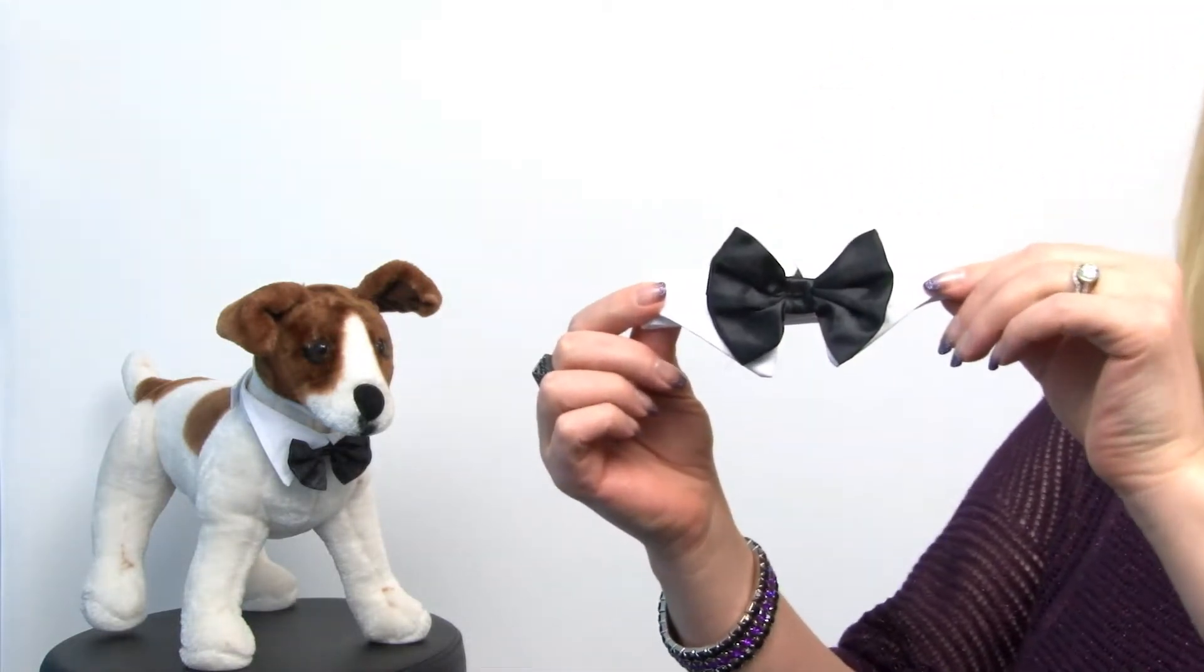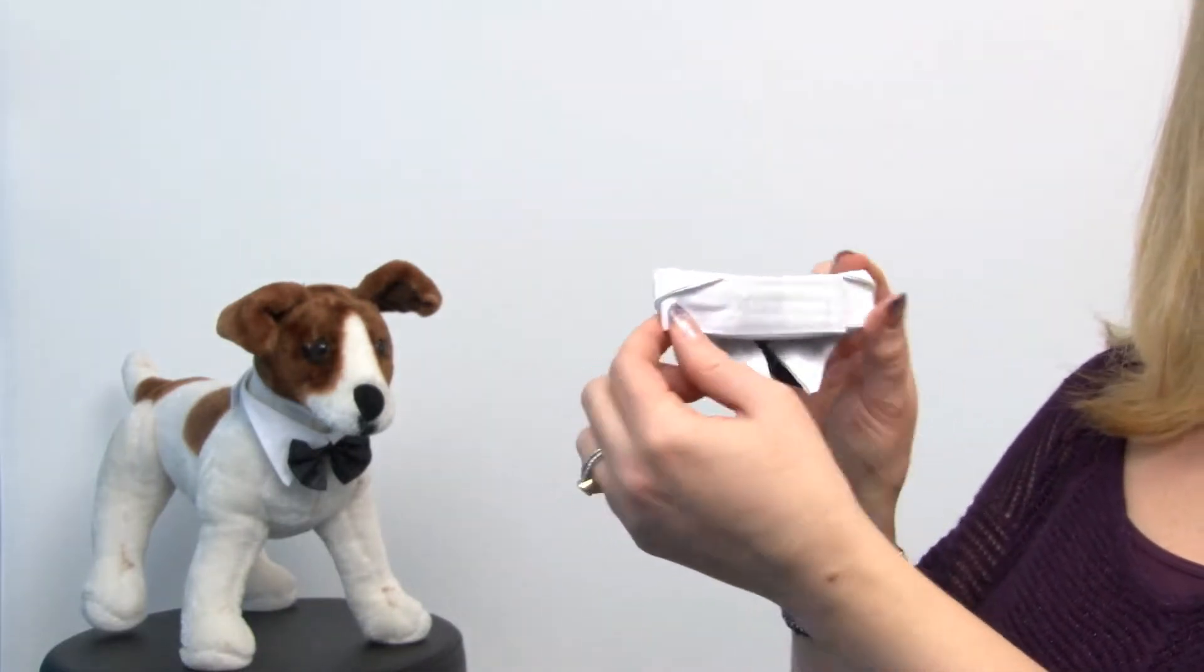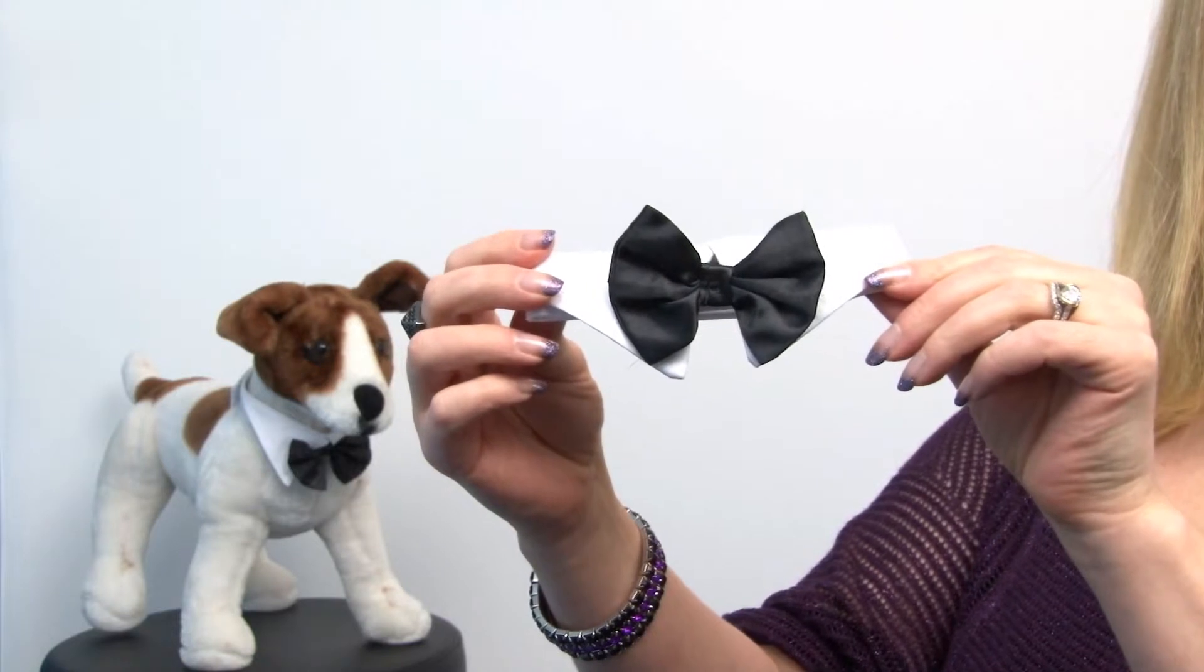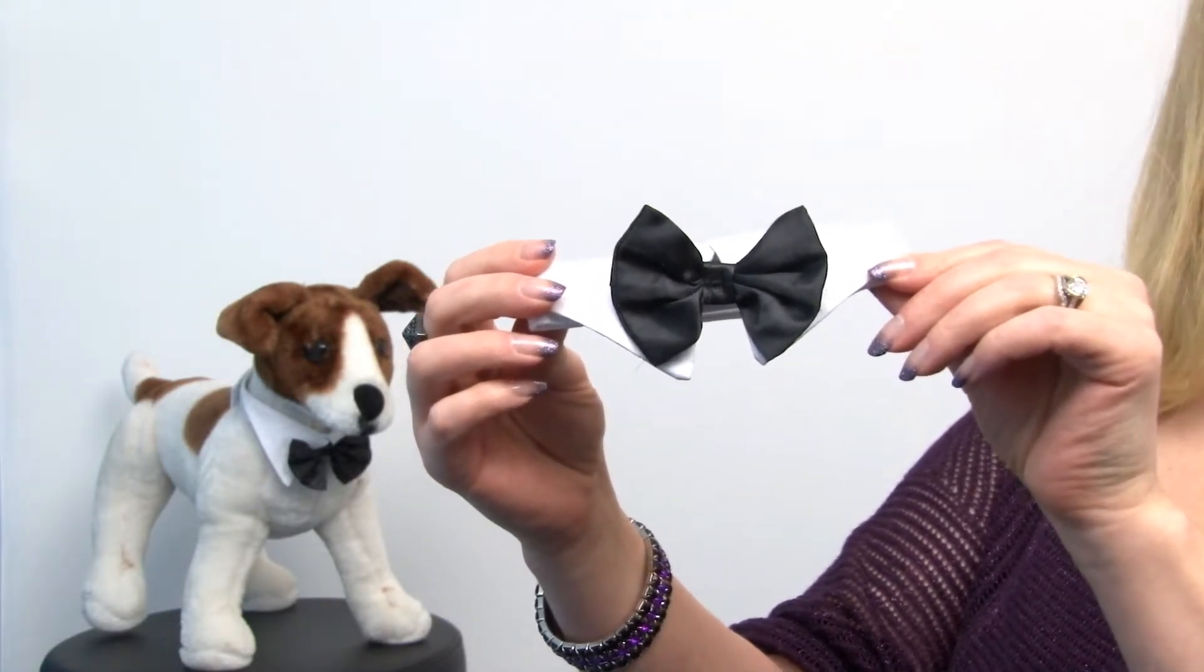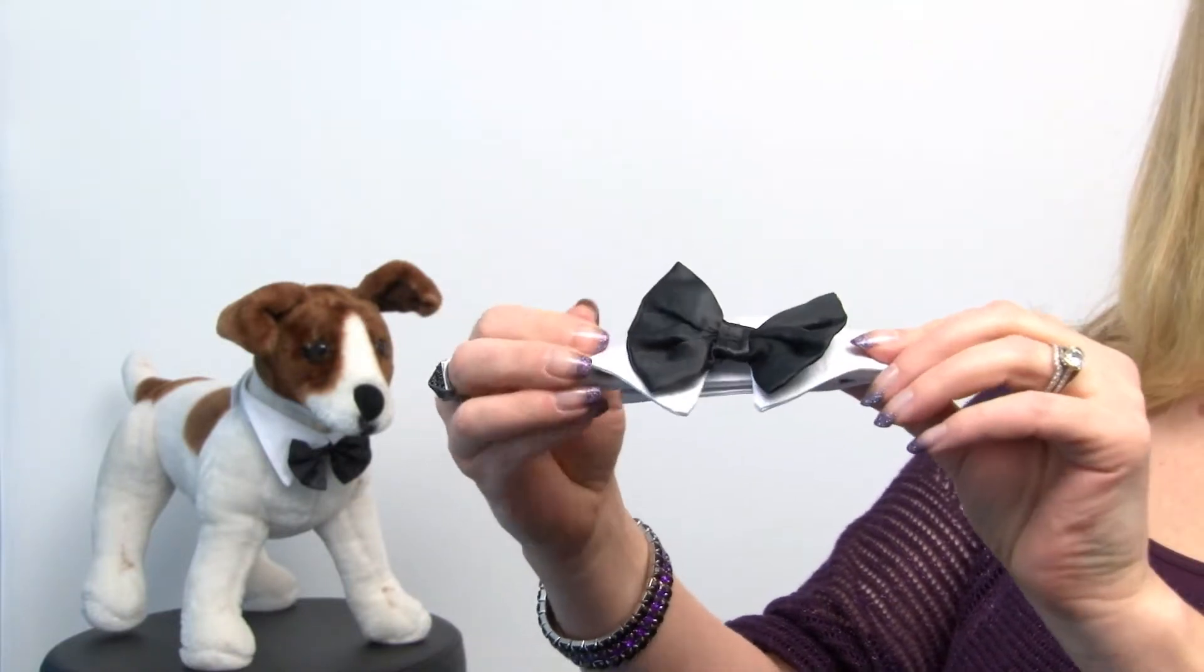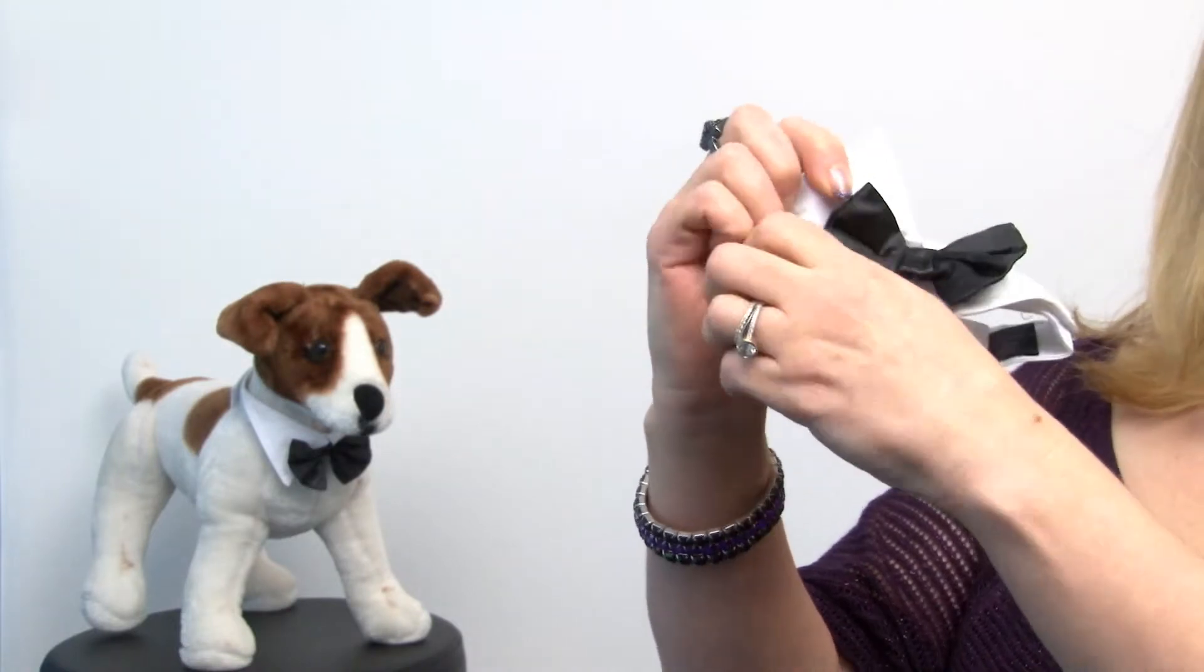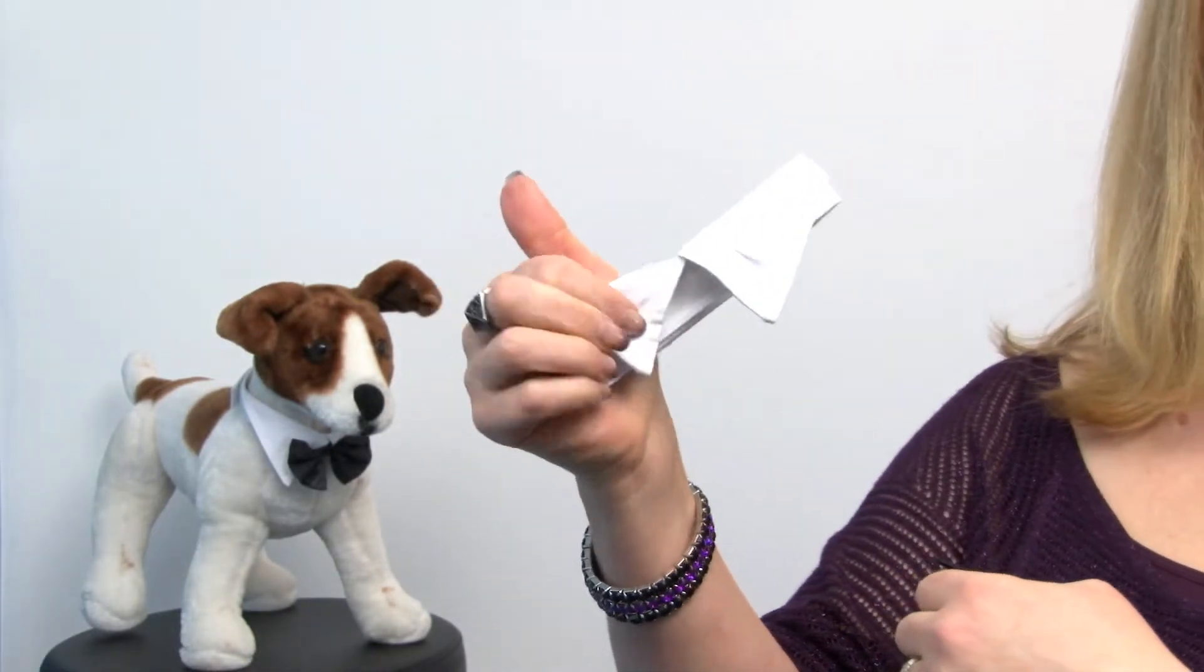This is the perfect accessory for any dressy event for your pet. It's very simple to use. It features Velcro closure on the back. It has a stiff white collar so it's going to look sharp for photo opportunities and any dressy occasion. One of the nice features about it that we like is the fact that it is attached to the collar with Velcro so that it's perfect for laundering without any color transfer.